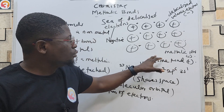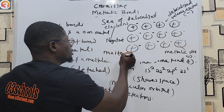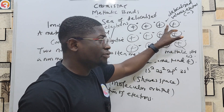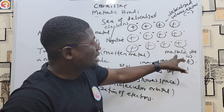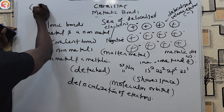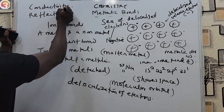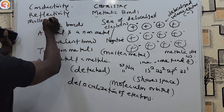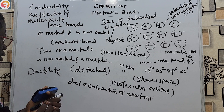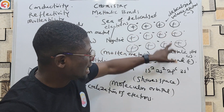Metallic bonds are present in molten metal. The attraction between the sea of delocalized electrons and the metallic ions is responsible for the high conductivity, high reflectivity, high malleability, and high ductility of metals.